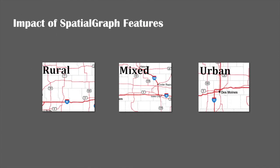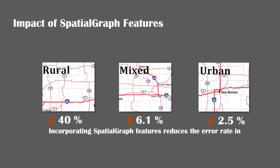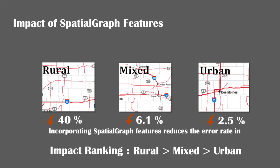Interestingly, in rural and mixed regions, the spatial graph features bring down the error more effectively than other features. However, it has a very weak impact on urban area.